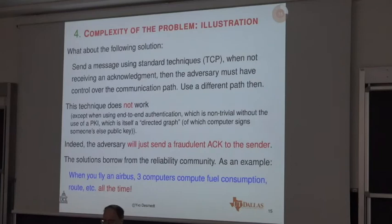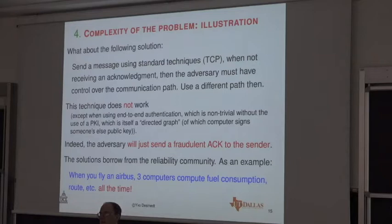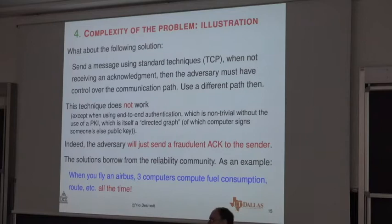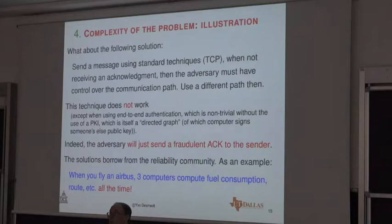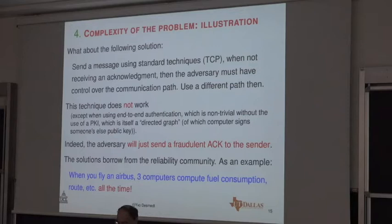I'm going to talk a little bit about the complexity of the problem as an illustration. The solution is: you have a network with adversaries inside and you want to communicate. If you really want very high security, don't trust the PKI — it can be easily hacked. You might send a message using standard techniques like TCP; when not receiving an acknowledgement, the adversary must have control of the communication path, so use a different path. Unfortunately, it doesn't work.